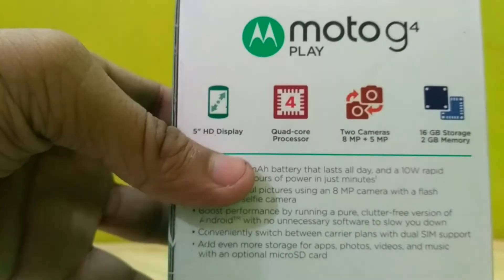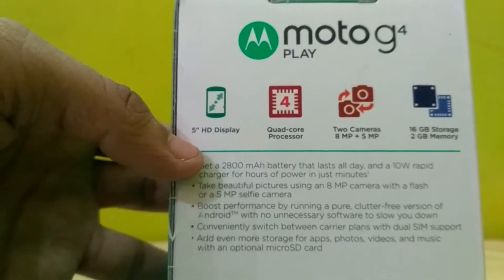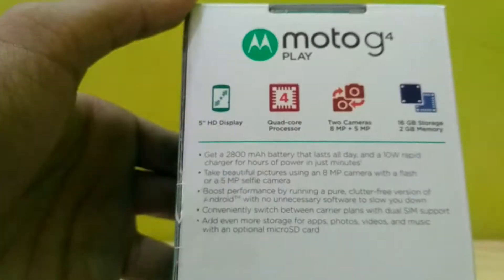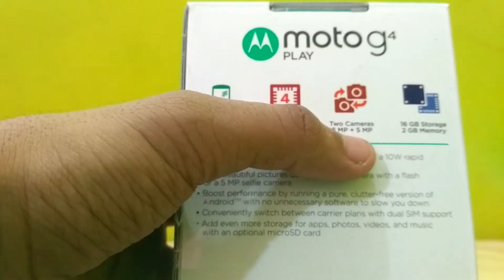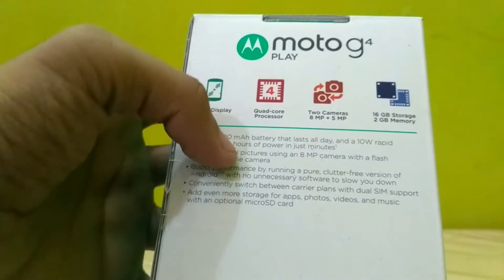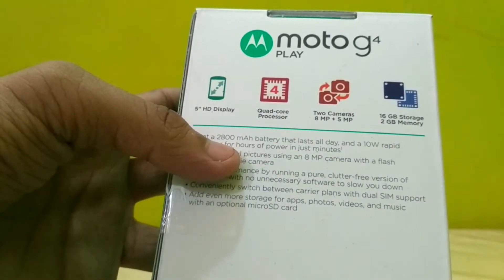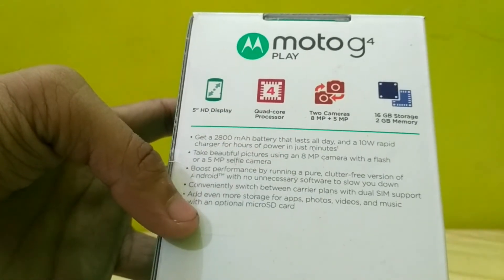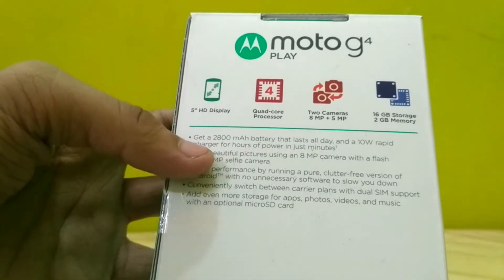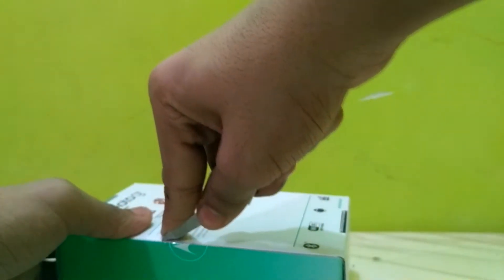This is the box and in the back it is written 5 inch display, 4 core processor, 8 megapixel rear camera and 5 megapixel selfie camera, 16 gigabyte of storage and 2 gigabyte of memory. It has 2800 mAh battery, 8 megapixel and 5 megapixel camera and Android inside the phone. So let's cut the seal of it.